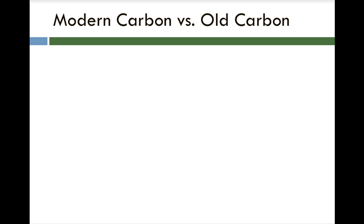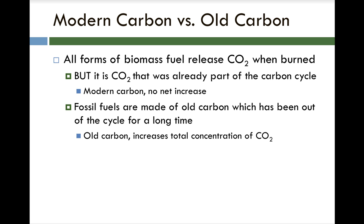Let's explain the no net carbon concept — this is an important concept to understand. We're talking about the difference between modern carbon, carbon that's already present day a part of the carbon cycle, versus old carbon that hasn't been part of the carbon cycle for many millions of years. All forms of biomass fuel will release CO2 when burned — there's no way to get around it. The important distinction is that when you burn biomass fuel, it's carbon dioxide that was already a part of the carbon cycle.